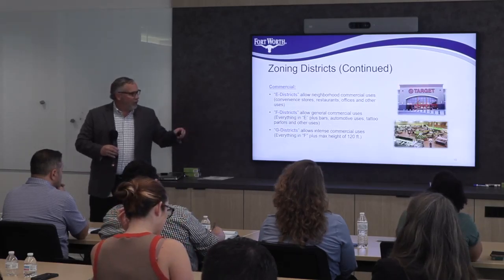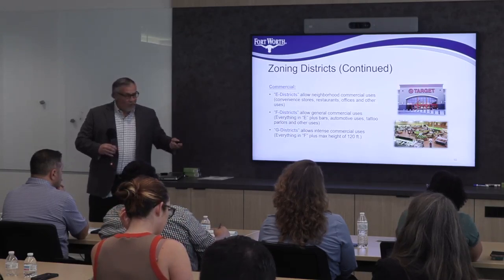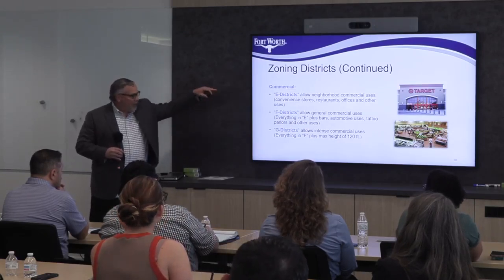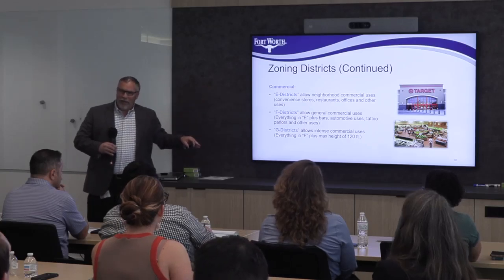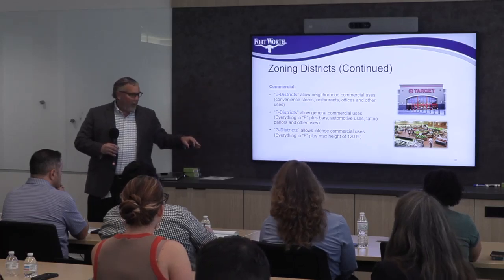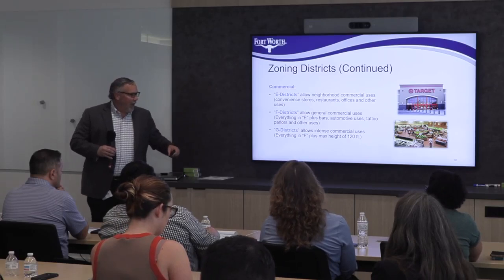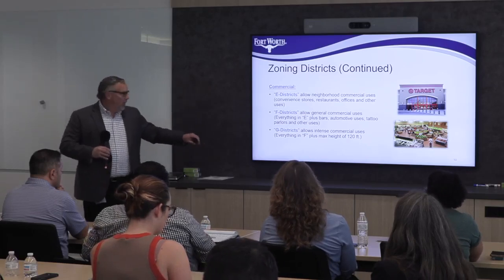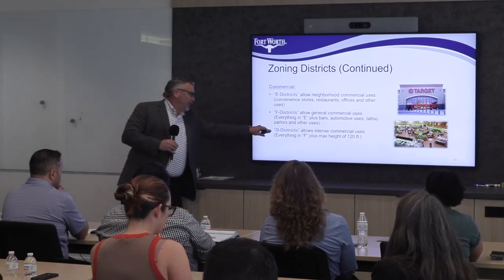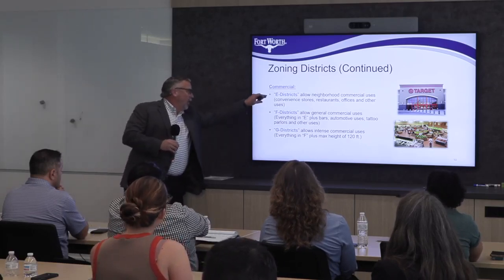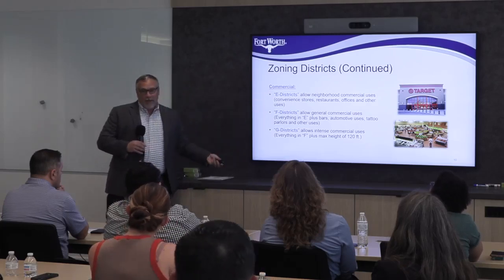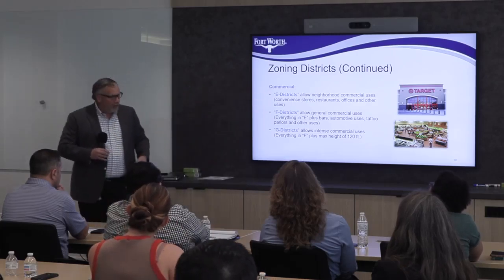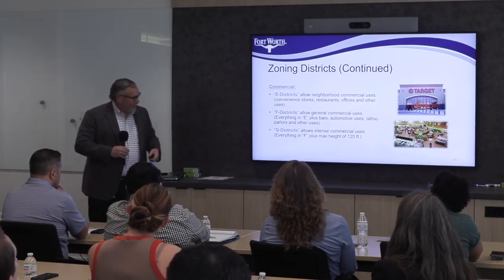Then you have our commercial districts: E, F, and G. E is our neighborhood commercial. G is what you would find maybe near a freeway or something of that nature. And in G zoning, you can do all uses in E and F as well.